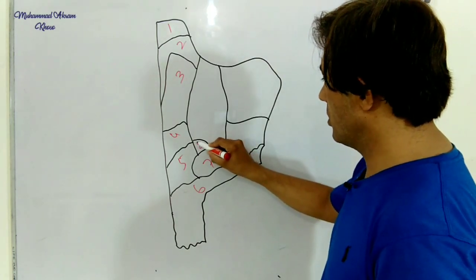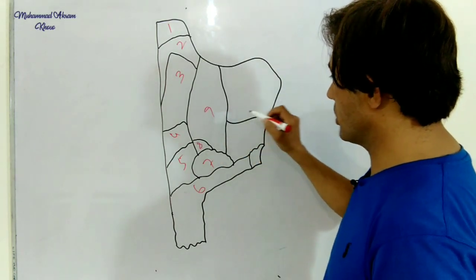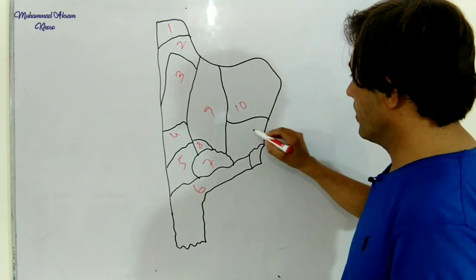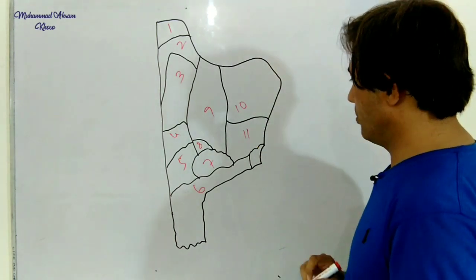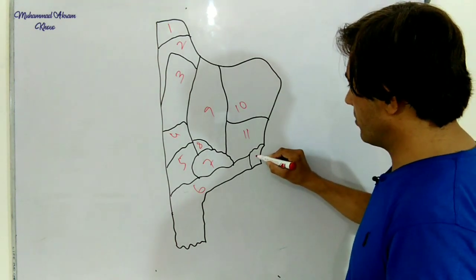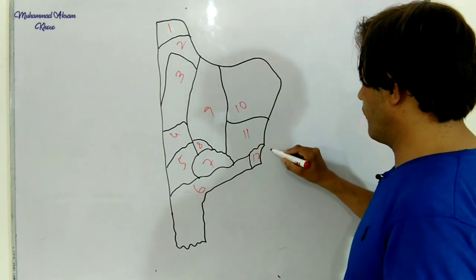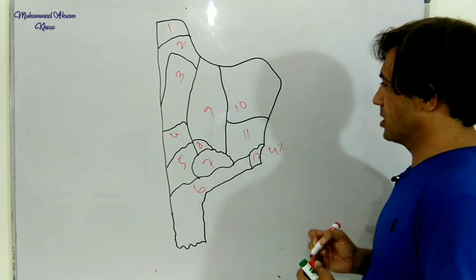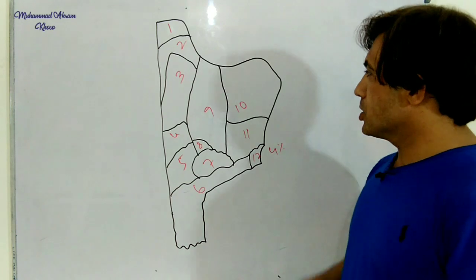Number nine is Serbia. Number ten is Romania. Number eleven is Bulgaria, and number twelve is part of Turkey. So only four percent of Turkey is in the European side, 96 percent of Turkey is in the Asian side.